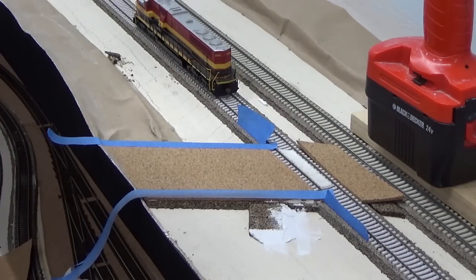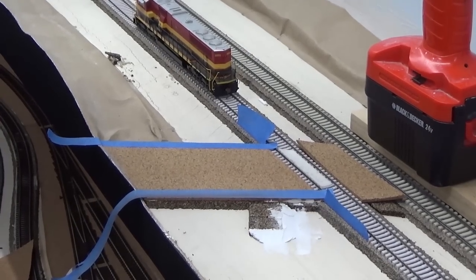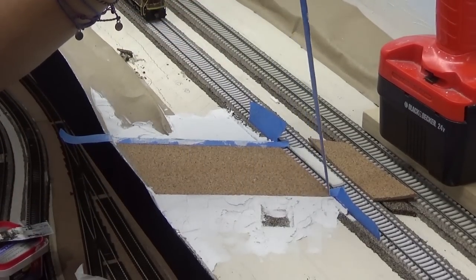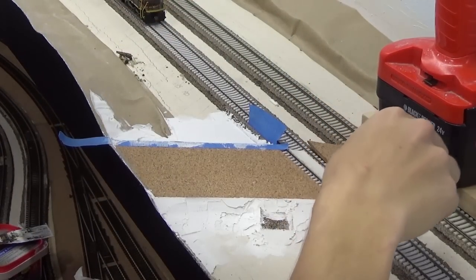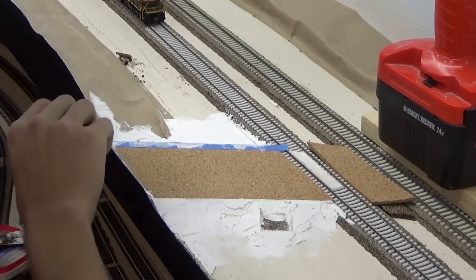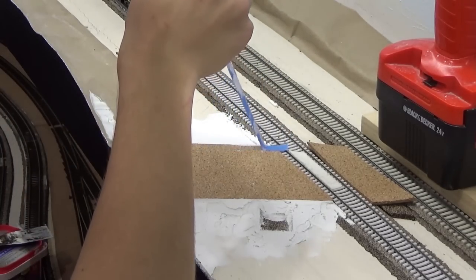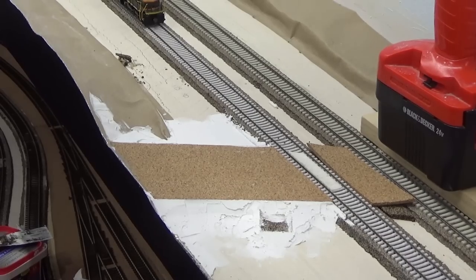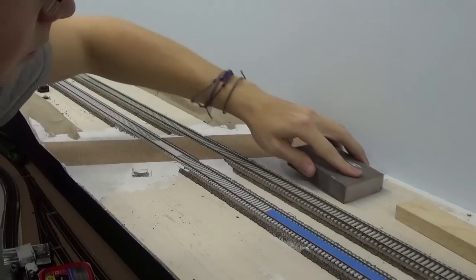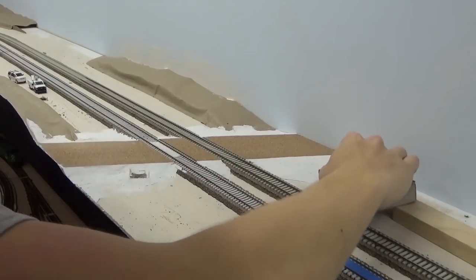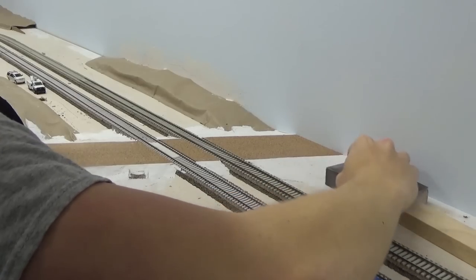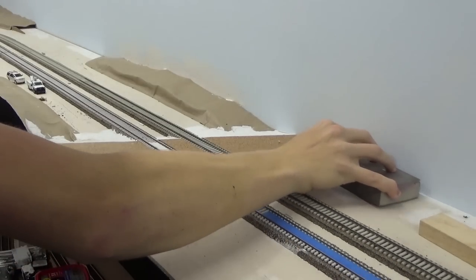You'll see I taped the edges of the cork because what I'm going to do next is put down some thick tape to define the limits of the road, and I want to make sure that tape actually sticks to the cork. I didn't want any dusty, chalky putty up on the cork, which is why I put the tape over there. Once it was all dry, I then took a drywall sanding block and just sanded down any bumps or ridges to smooth it in a little bit better.